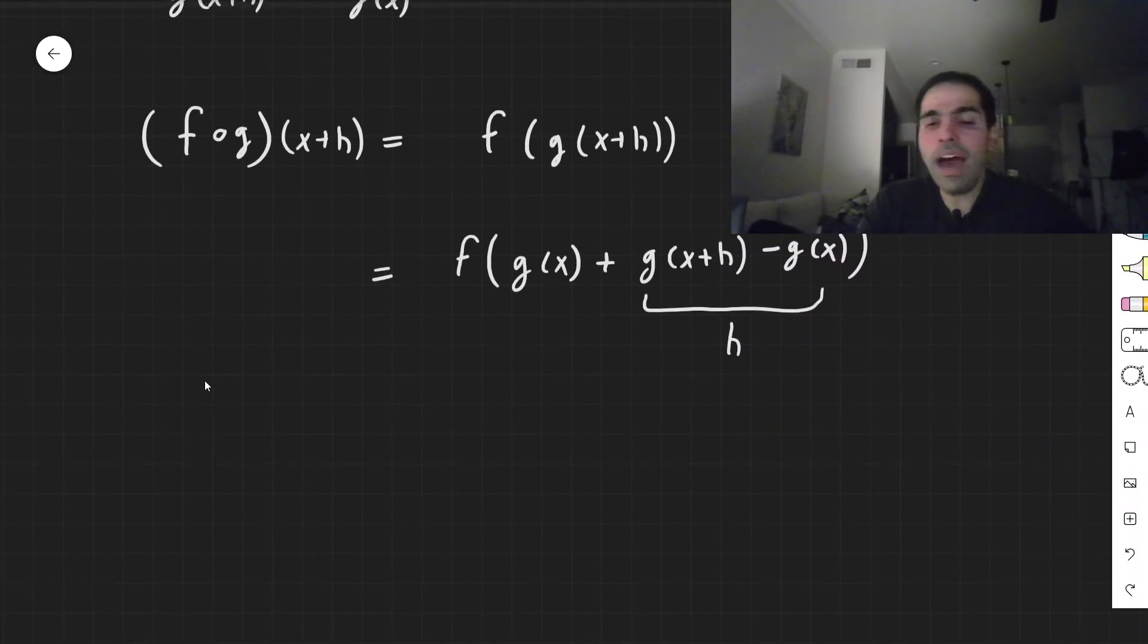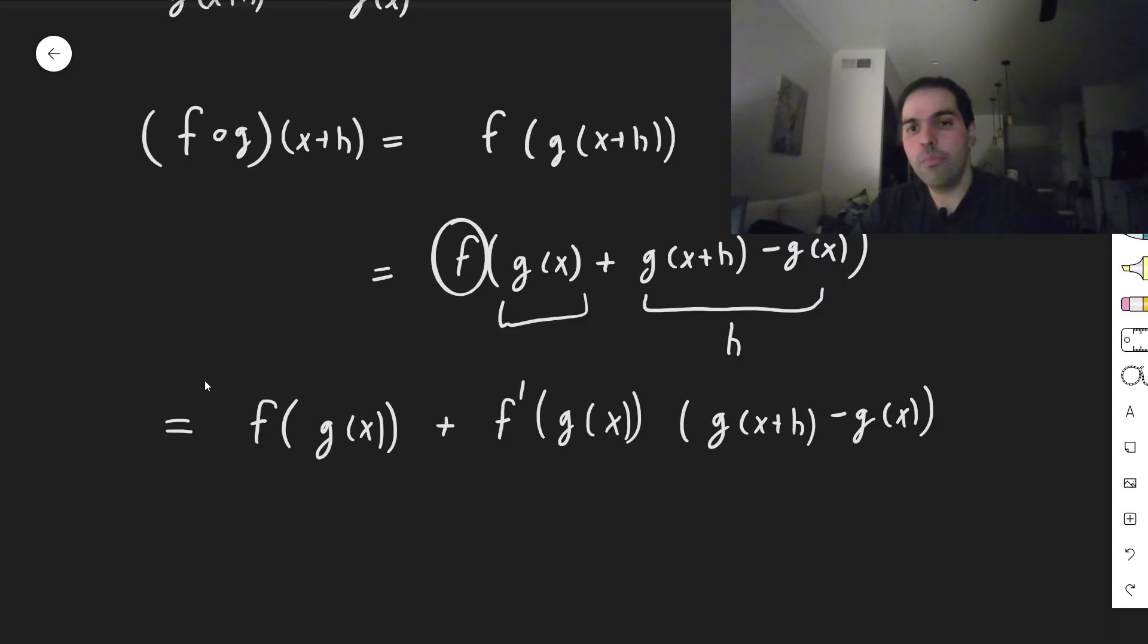So by the definition of the derivative of f, this gives you f of g of x plus f prime, again, at that point, of g of x times h, which now is g of x plus h minus g of x.